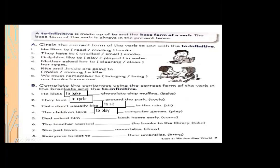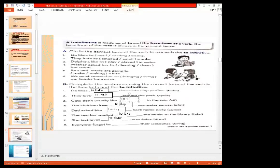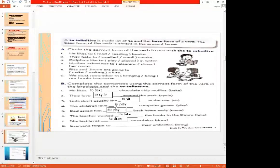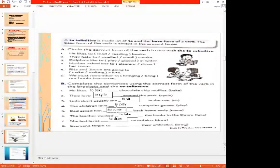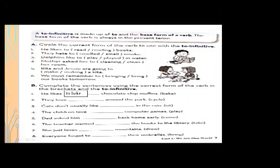Number six: the teacher wanted — blank — the books to the library. We complete the sentence using 'to' with the first form of the verb. The teacher wanted to take the books to the library. Number seven: she just loves to draw mountains.